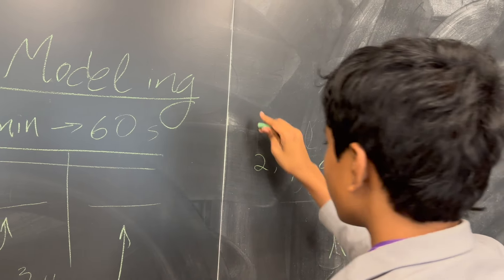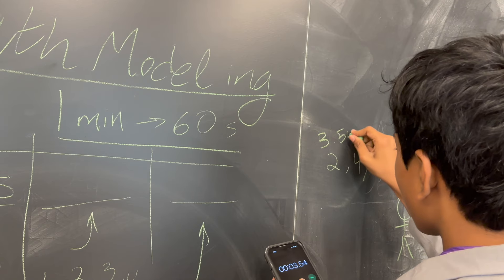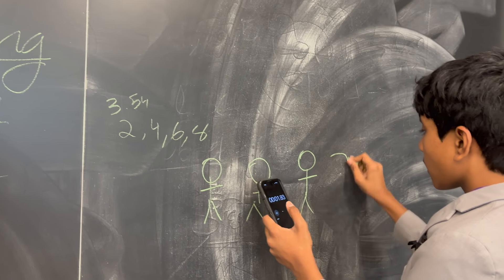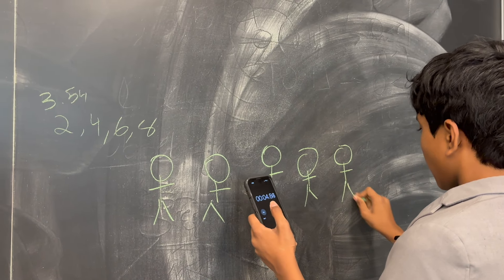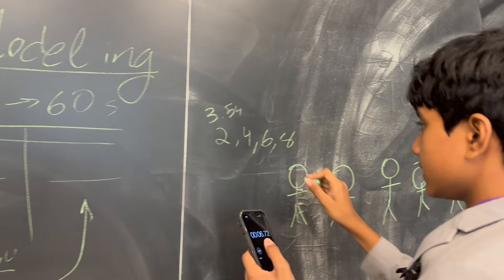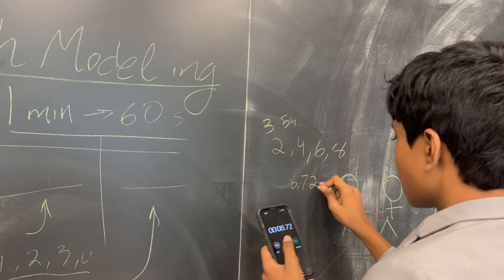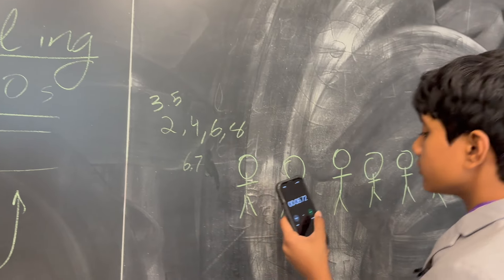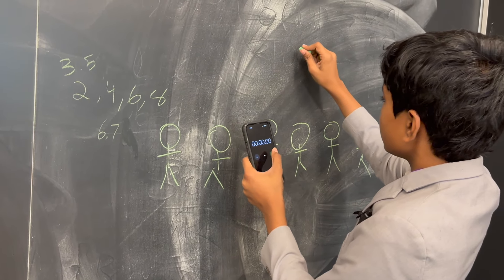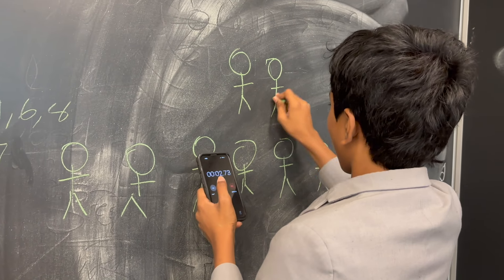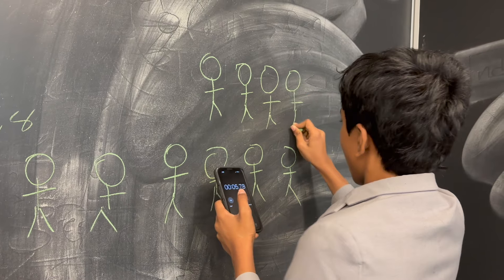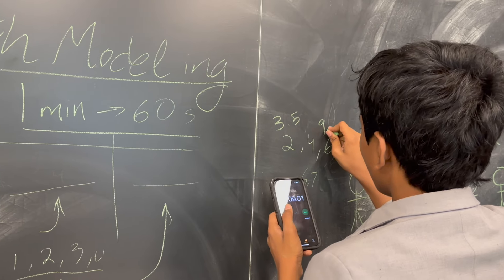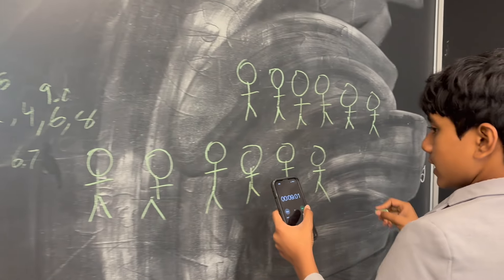Now we reset and start again. Stop, and that's 6.72 for four. Only one decimal? Well, if we're rounding to one, we get 3.5, 6.7. Now we reset and we start again. Okay, that took 9.01 seconds or 9.0 if we just round.